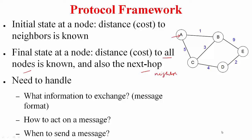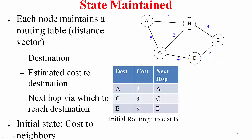Whenever we want to implement an idea as a protocol, we need to handle three questions: first, what information needs to be exchanged — this boils down to the message format; second, once a node receives a message, what should it do — the action portion; and third, when should such messages be sent. When executing a protocol, you also need to maintain state. Each node maintains what is called a routing table, also called a distance vector.